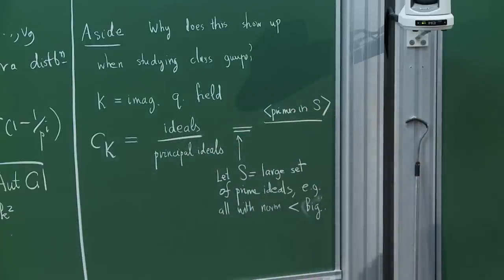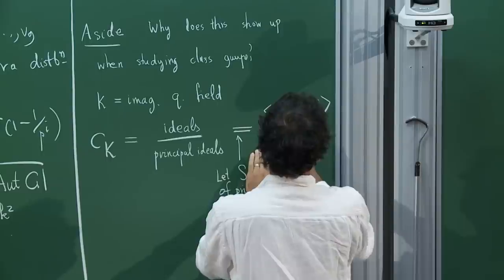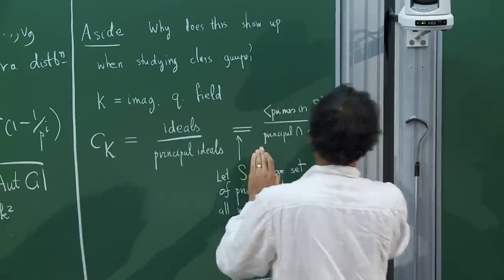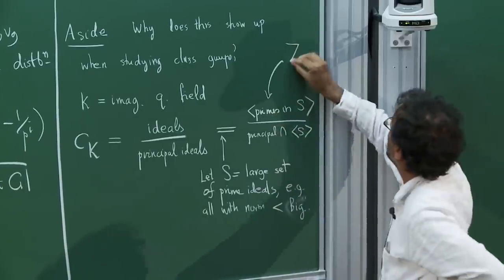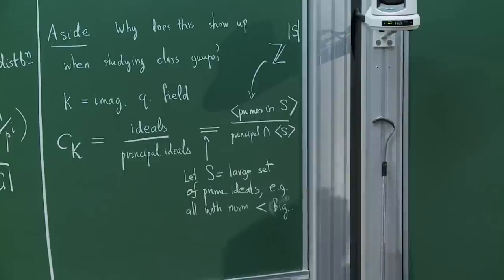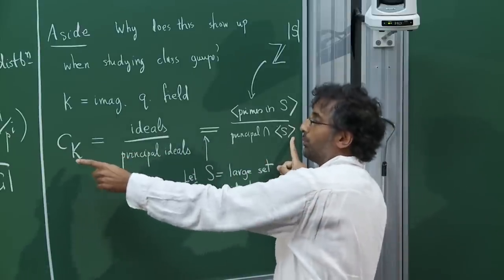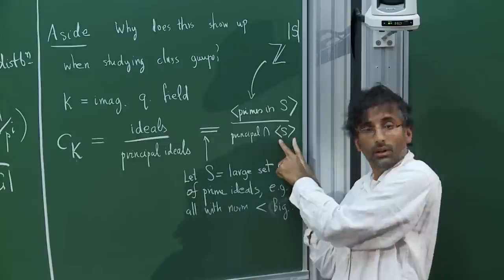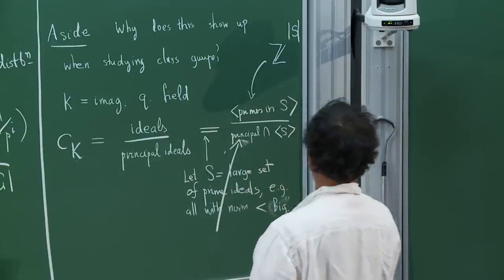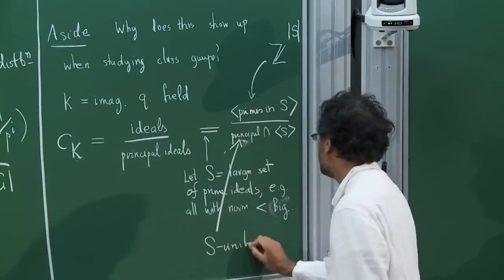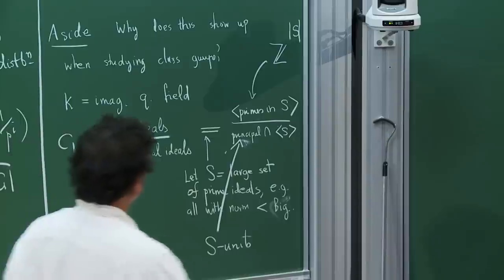If S is large enough, you can replace this by a finite version, where we look at those ideals generated by primes in S, and quotient only by the principal ideals intersect that set. The top thing — what you get from all primes in S — is clearly a free abelian group of rank equal to the size of S. The bottom thing comes from the S-units: elements of K all of whose prime factors lie only in S. Dirichlet's unit theorem shows this is also a free group of rank |S|.